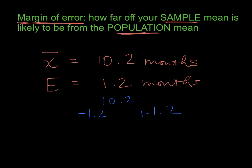So subtracting 1.2 from 10.2 gives us exactly nine months. And if I take 10.2 and I add 1.2 months, I get 11.4.